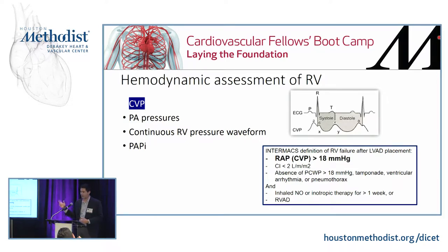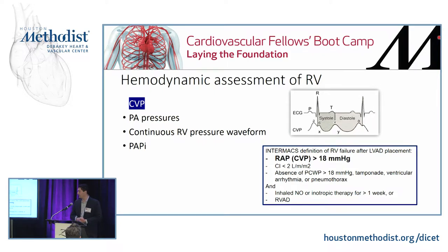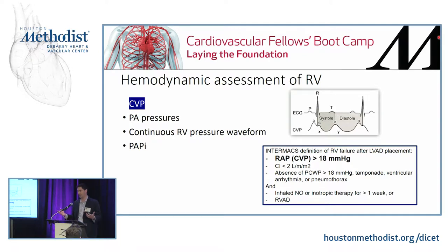Intermax — a registry of clinical outcomes for patients with LVADs and mechanical assist devices — has come out with probably the best, most recent definition for perioperative RV failure. They use CVP as one of the big staples of its definition. So if the CVP is high (they use 18), the index is low, there's no other reason to explain it, and the patient is requiring extensive therapy, that's periop RV failure.